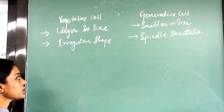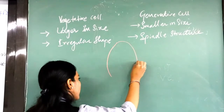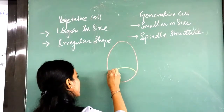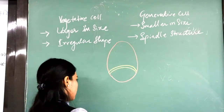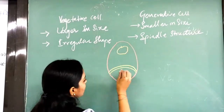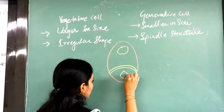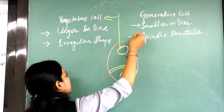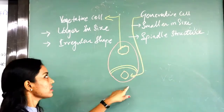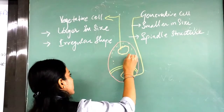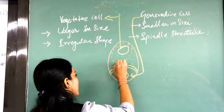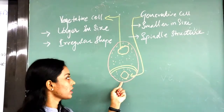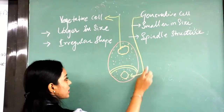Now we will see the maturation of a pollen grain. Upon maturation, two types of cells are formed: vegetative cells, which are irregular in structure, and generative cells, which are spindle-shaped. Generative cells also have some deposition of sporopollenin as well as cellulose. Generative cells float in the cytoplasm — that is a particular characteristic of generative cells.